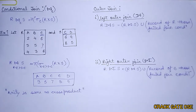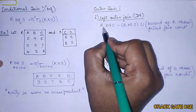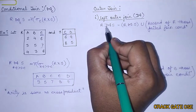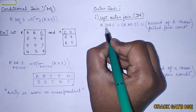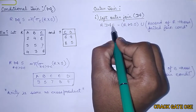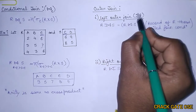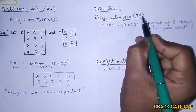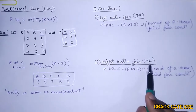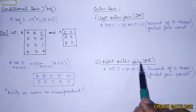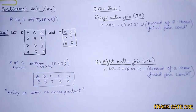Outer join has three categories: left outer join, right outer join, and full outer join. The left outer join symbol is the join symbol with bars on the left side; right outer join has bars on the right side; and full outer join has bars on both sides.